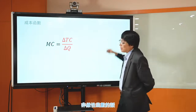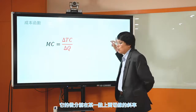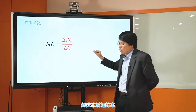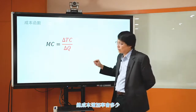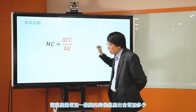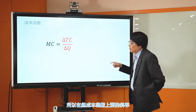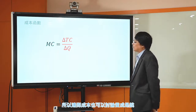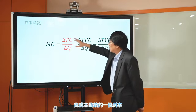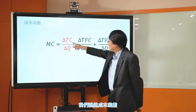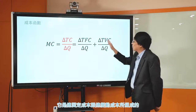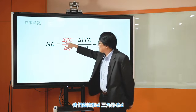边际成本可以看成是总成本函数的斜率。总成本由总固定成本加总变动成本组成。对总成本求关于Q的微分，可以分别对总固定成本和总变动成本各自求微分。总固定成本是一个常数，不管产量怎么变动它都固定，所以总固定成本对Q求微分是0。因此边际成本等于总成本对Q求微分，也等于总变动成本对Q求微分。